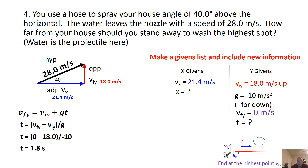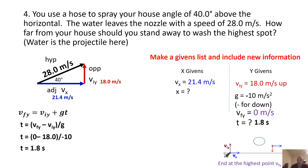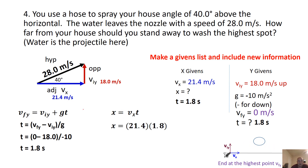Now we know it takes 1.8 seconds to reach the highest point, and that is also the time the water has to go forward. So we plug that T into the X-axis equation: X equals VX times T — the only constant-motion equation we use. VX is 21.4 and T is 1.8, giving us 38.52 meters. You'd have to stand pretty far away from the house — 38.52 meters is a pretty big distance.